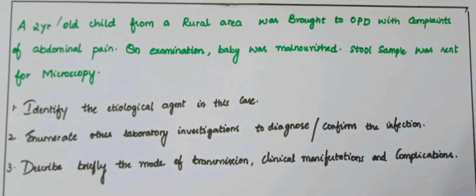Stool microscopy to detect eggs — both fertilized and unfertilized eggs can be detected by saline and iodine wet mount examination. Barium meal X-ray of the GIT to demonstrate adult worms in the intestine. Ultrasound or cholangiopancreography to detect adult worms in extra-intestinal sites. Larval detection: larvae may be found in sputum or gastric aspirates during the early pulmonary migratory phase.